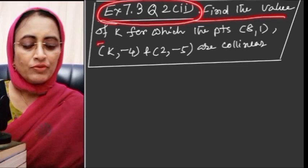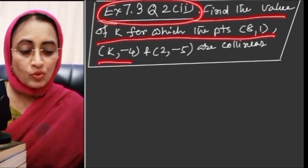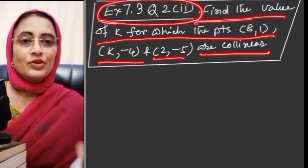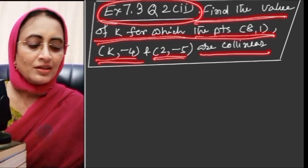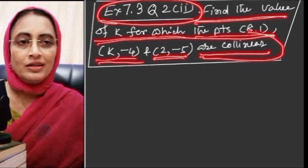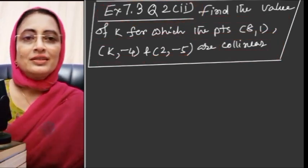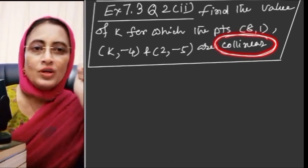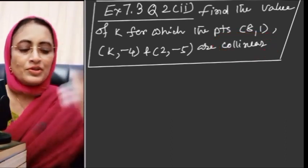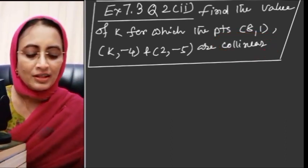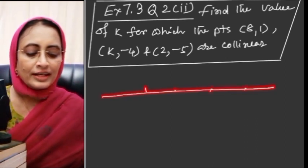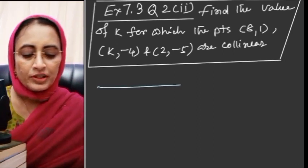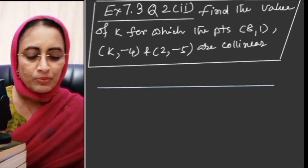Question number 2: Find the value of k for which the points (8, 1), (k, -2), (-5, ?) are collinear. Collinear - what does that mean? Collinear points are nothing but the points which lie on a single line.